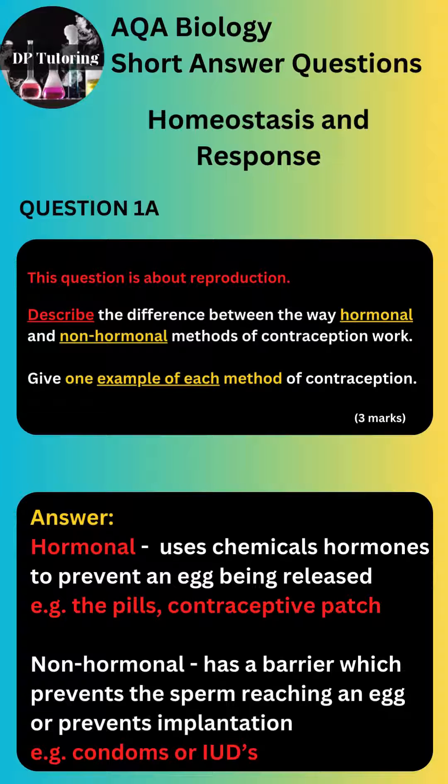Non-hormonal contraception uses a barrier that prevents the sperm from reaching an egg, or prevents implantation. Examples include condoms or IUDs.